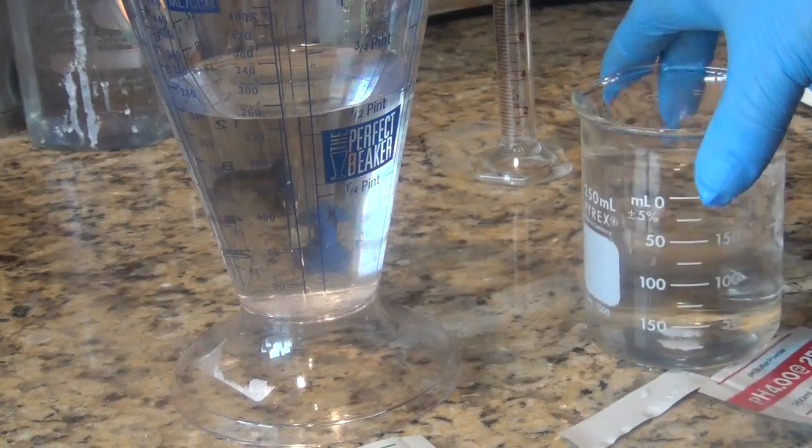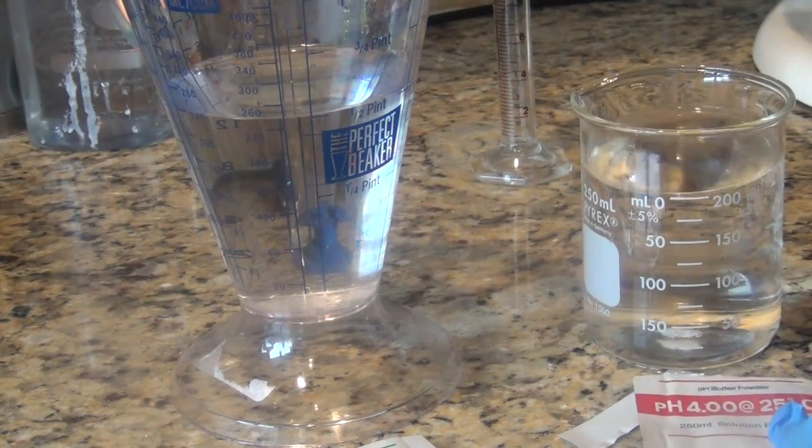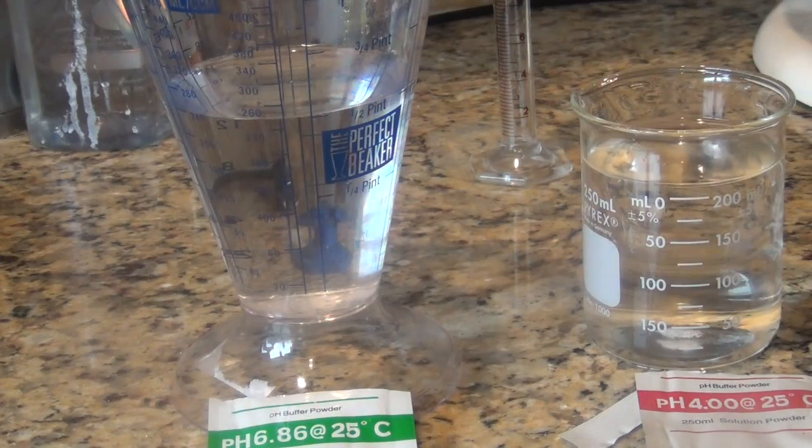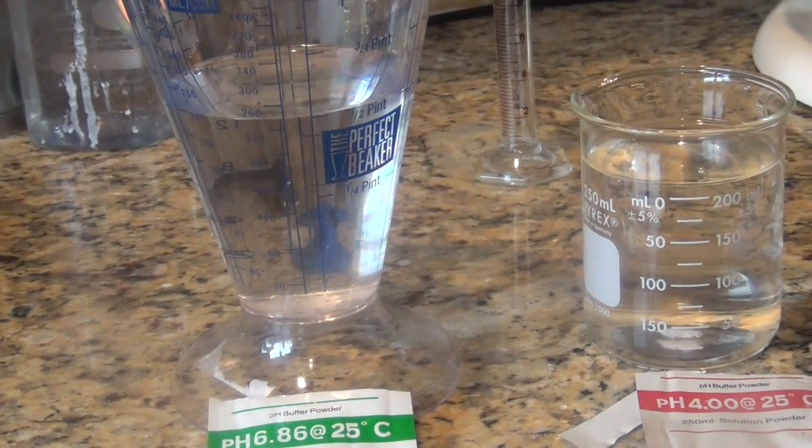And now into this beaker I put the red buffer powder and in this the green buffer powder. So what I'm going to do now is I'm going to turn on my pH meter.